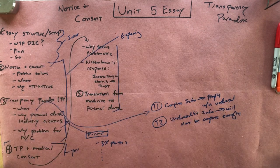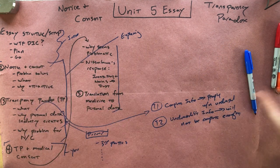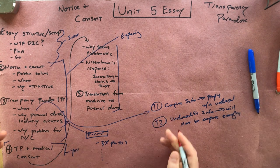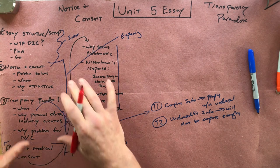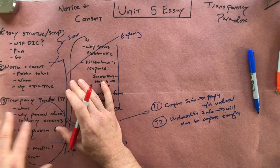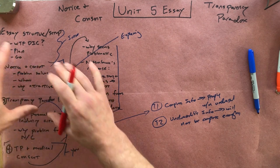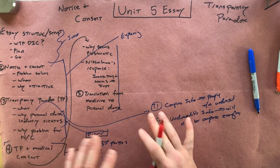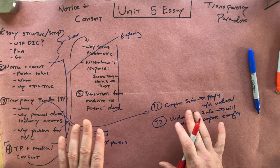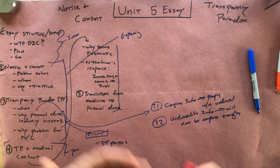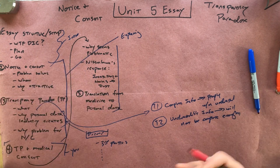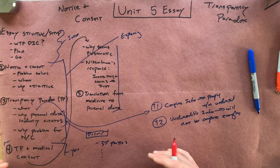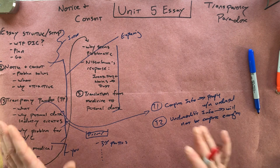So, you've set out what the transparency paradox is and why it's a problem — the reader knows what that is. Now imagine that you're a friend of the notice and consent model — somebody who thinks we should keep it but we need to fix it somehow. So you like the nutrition label model of how to fix the notice and consent model. Somebody like that, who's a friend of it, could look at the transparency paradox and say, well, yeah, Nissenbaum has set out a real problem here.